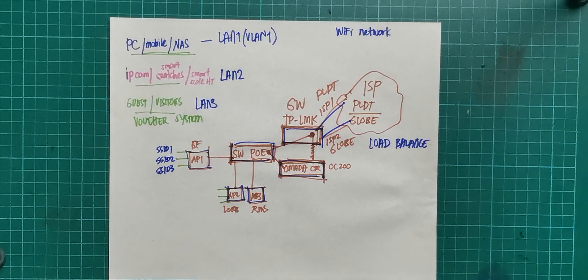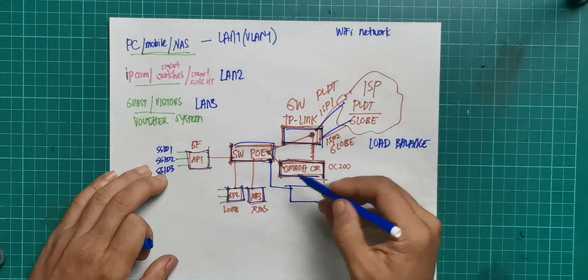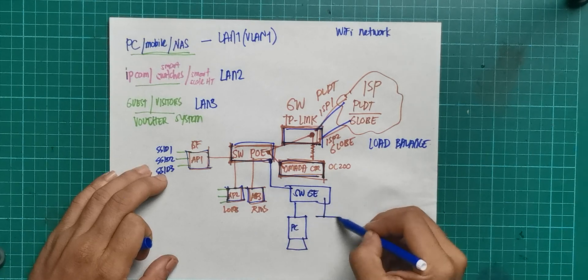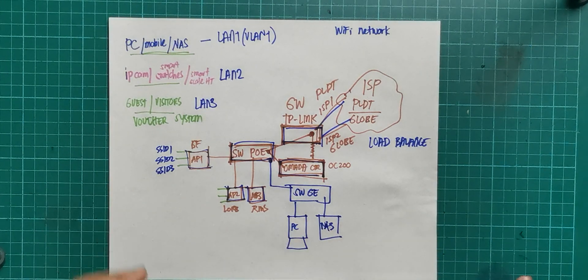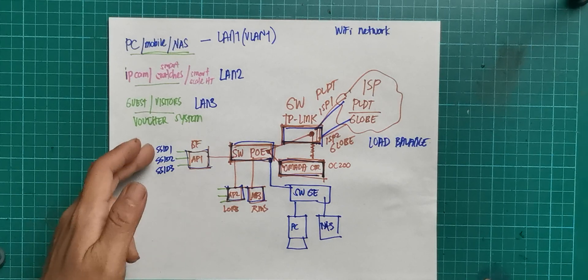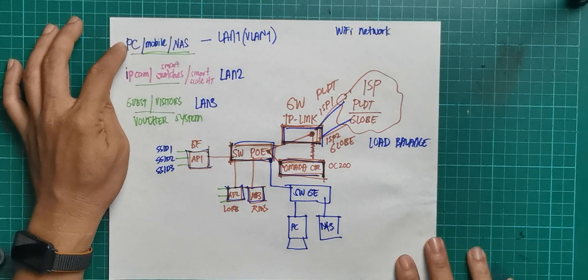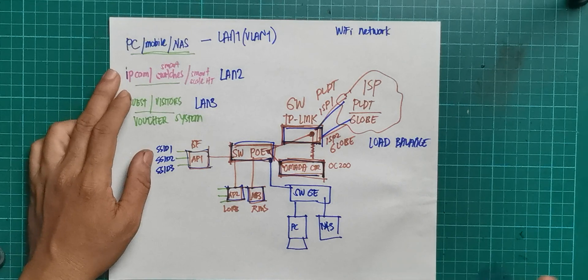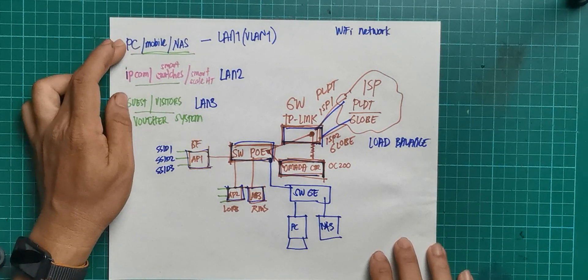For wired devices, I'm also using a Gigabit switch where the PC and NAS are connected. Each AP operates three SSIDs. SSID1 is specifically for PCs, mobiles, and NAS — for personal use. SSID2 is for IP cameras, smart switches, smart scale, and any smart devices, to isolate them from personal use.